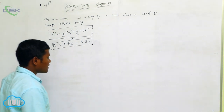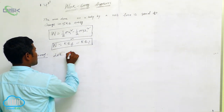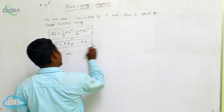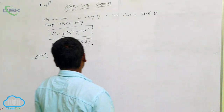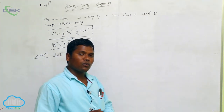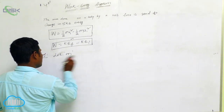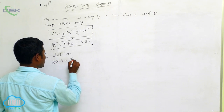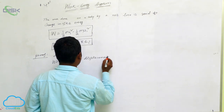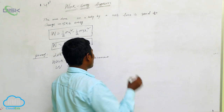Now let's prove the work-energy theorem. Consider an object of mass m moving with some velocity in one direction. To move it from one place to another, you must apply a force. The formula for work is W = F × s (force cross displacement).